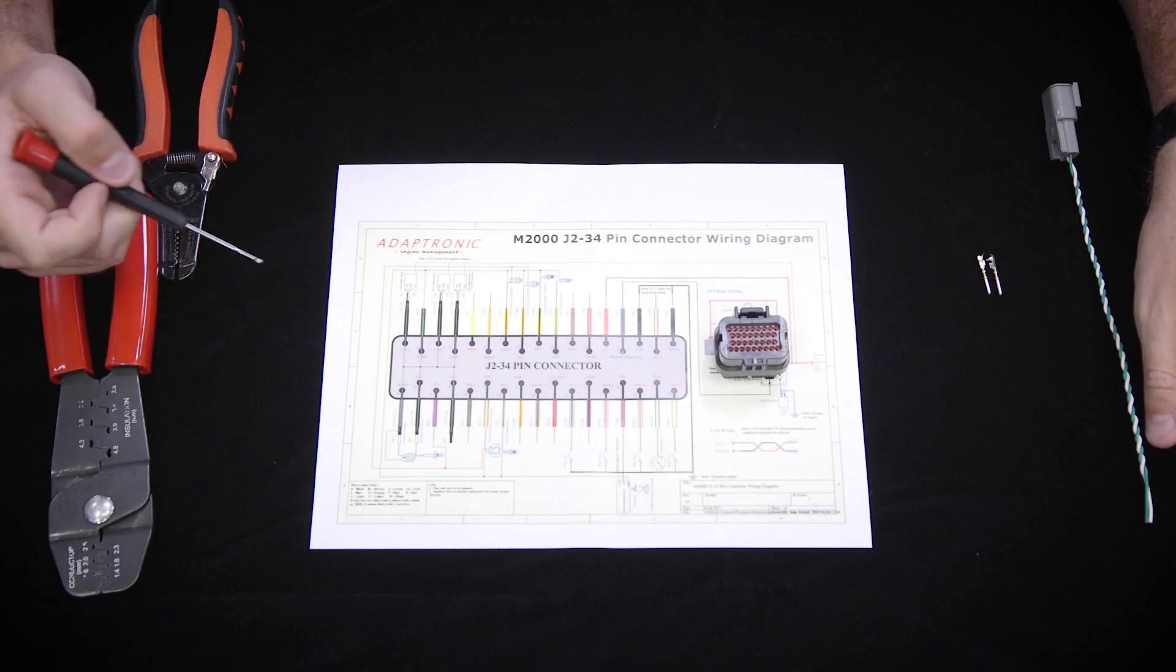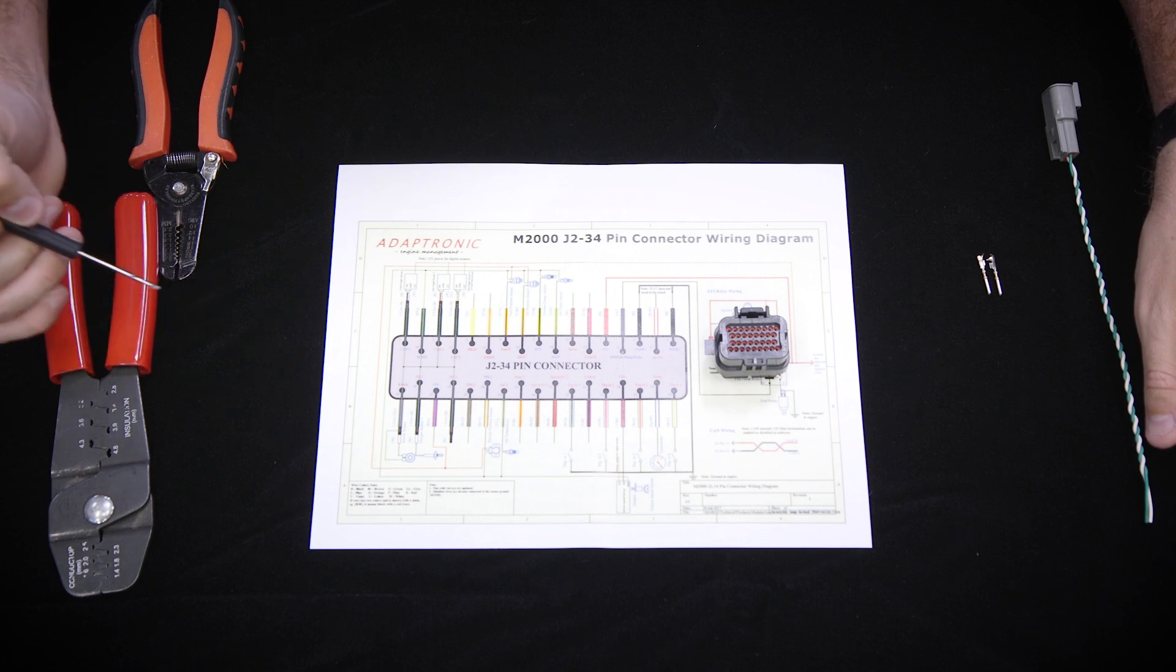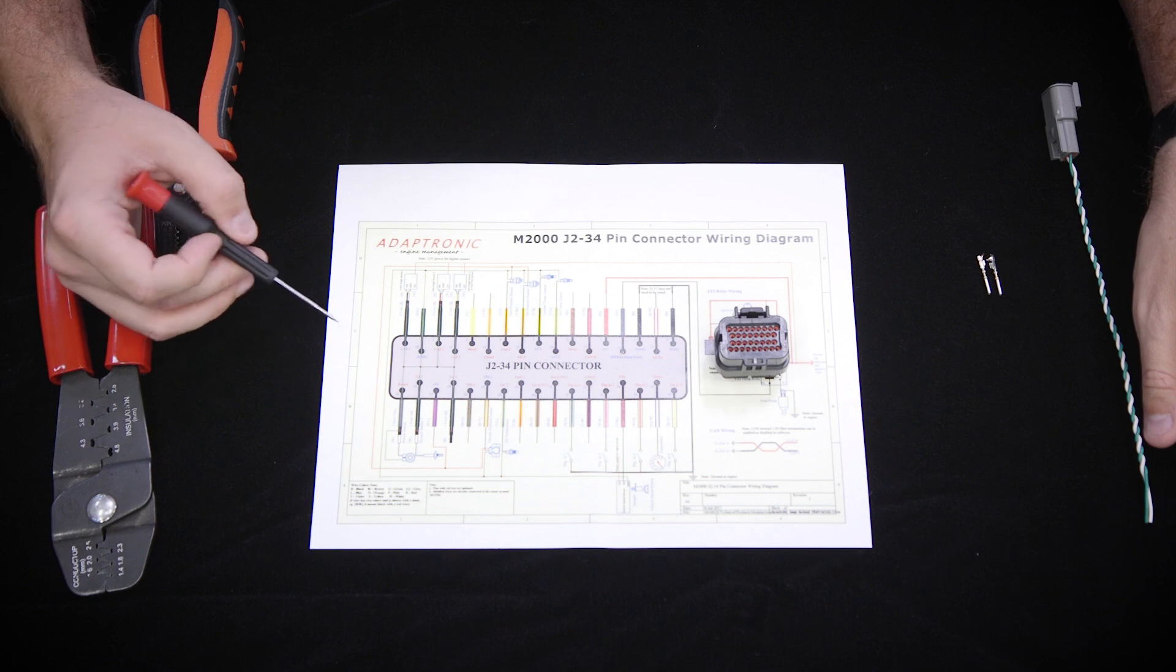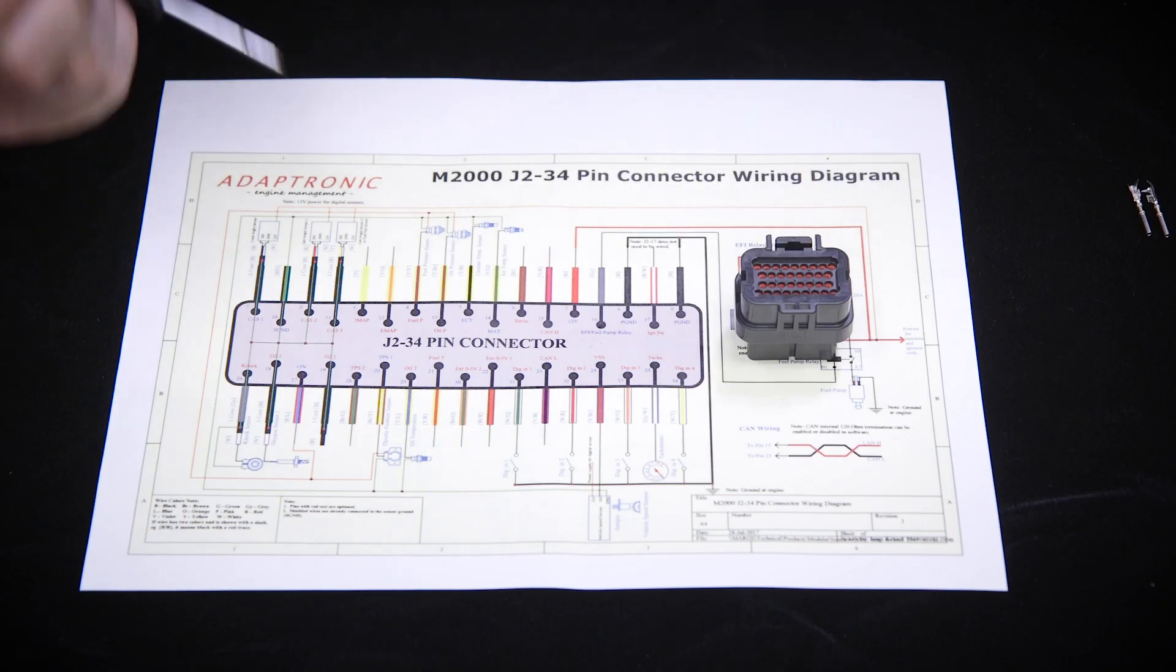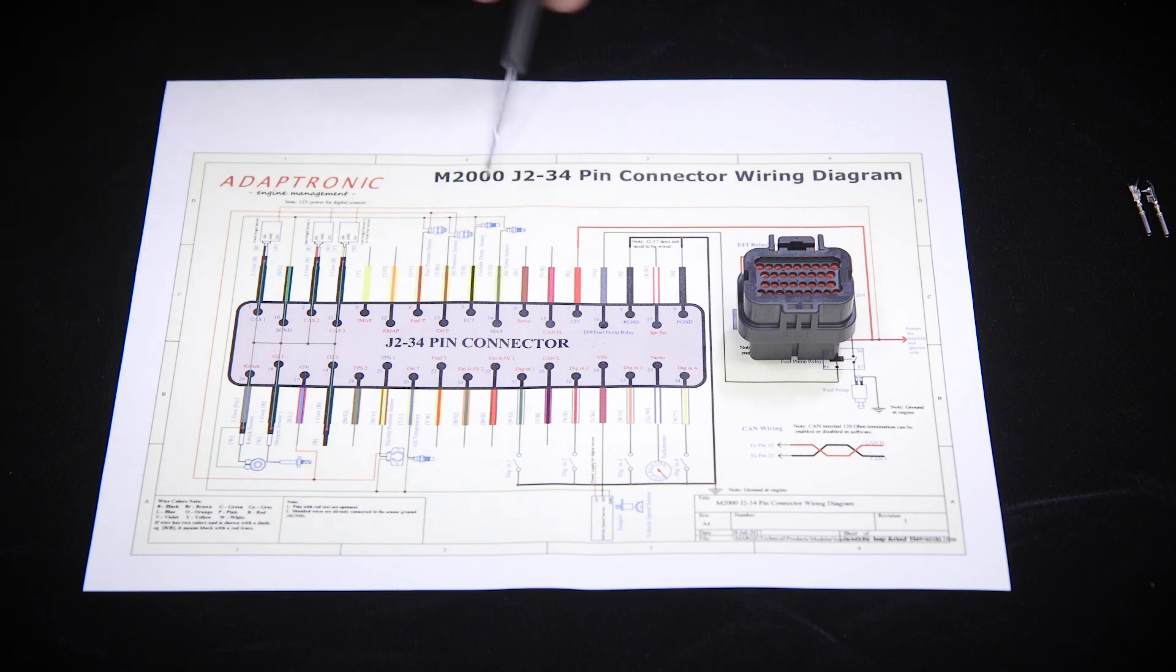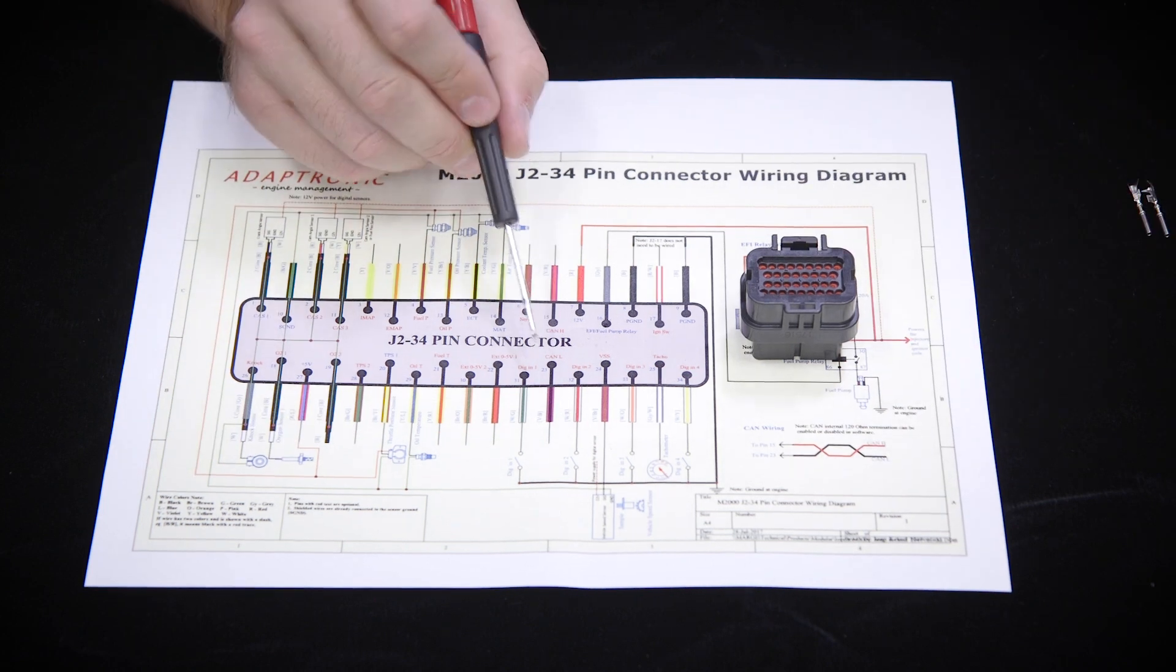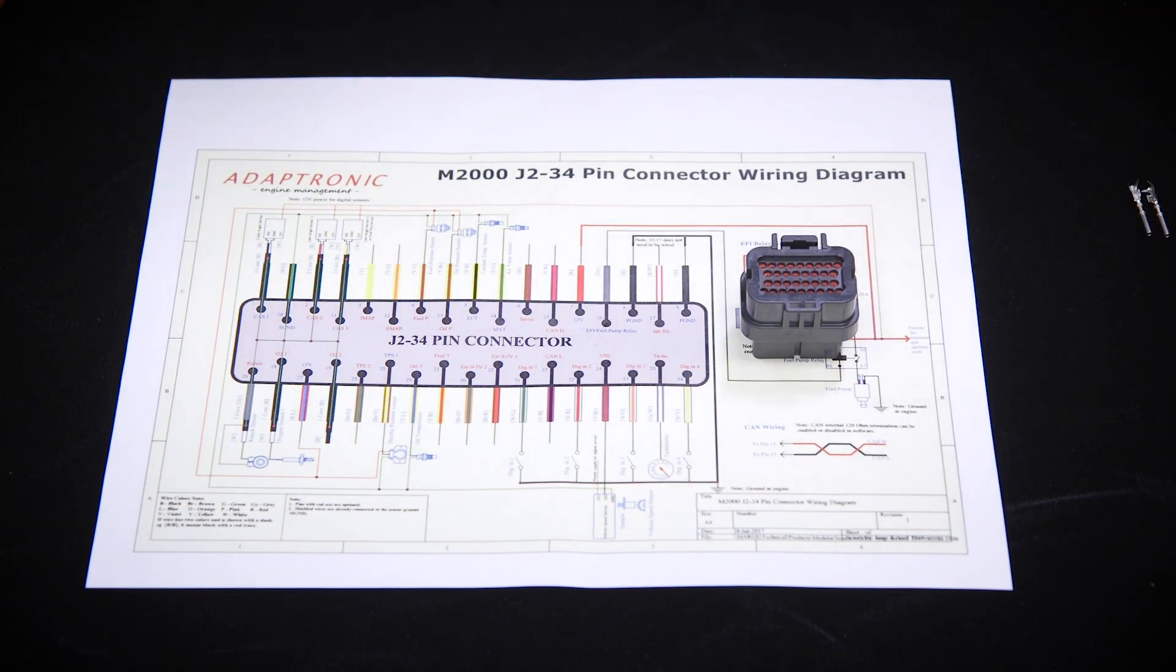So the CAN wires on the Adaptronic M2000 ECU are on the J2 connector and we have one of Adaptronic's beautiful color pin outs that they provide for you. This is the physical J2 connector and our CAN high wire is pin 15 which is right here and our CAN low wire is pin 23 which is directly below pin 15 on the connector.